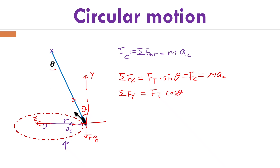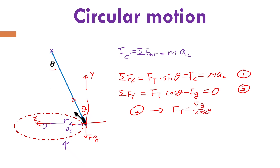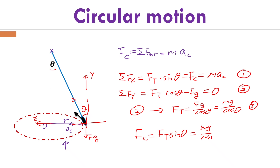Along the y-direction, tension times cosine theta minus Fg equals zero, since there is no vertical motion. From this equation, tension equals Fg divided by cosine theta, or mg divided by cosine theta. Substituting this into the horizontal equation, centripetal force equals tension times sine theta equals mg divided by cosine theta times sine theta, which equals mg tangent theta.